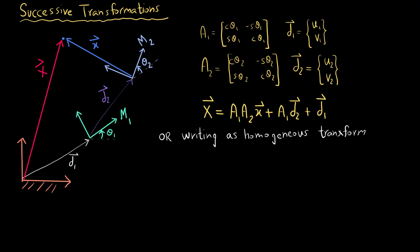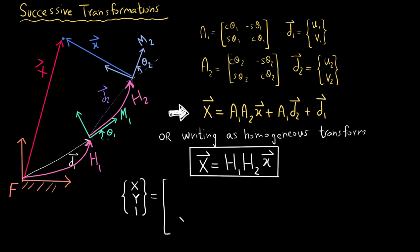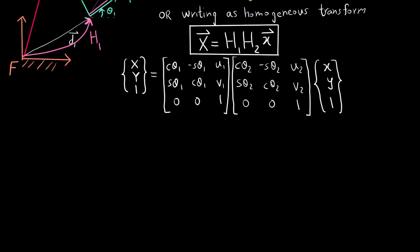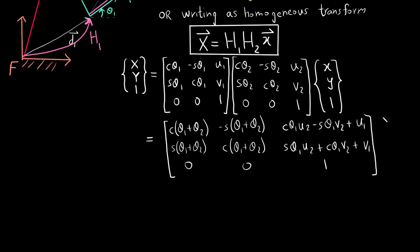Writing the same equation using homogeneous transforms: the first homogeneous transform h1 takes the fixed frame and moves it to the m1 frame, and the second homogeneous transform h2 takes the m1 frame and moves it to the m2 frame. So the entire equation can be written very concisely as big X equals h1·h2·x. This is just another way of writing the earlier equation. In expanded form, multiplying the first two matrices gives this result.